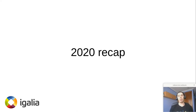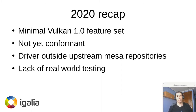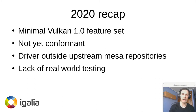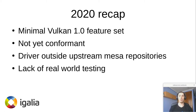Starting with a quick recap of where we were a year ago when we presented the driver for the first time at XCC: we had a minimal Vulkan 1.0 implementation. When I say minimal, I really mean fairly minimal — Vulkan 1.0 allows for many optional features and extensions that we just didn't have. We were also not conformant at that point; we were still squashing the last few CTS test failures. We had not merged the driver into the upstream Mesa repositories yet.